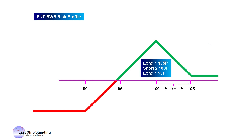Now let's look at a Broken Wing Butterfly using put options. In this example, we will buy a 105 and 100 put vertical and we will sell a 100 and 90 put vertical. The vertical we bought has a width of 5 points and the vertical we sold has a width of 10 points, which is twice as wide as the vertical we bought. Also notice the same short strike of 100 in both of the verticals.